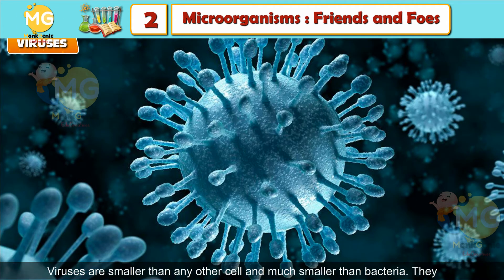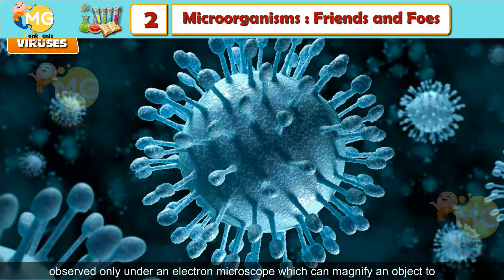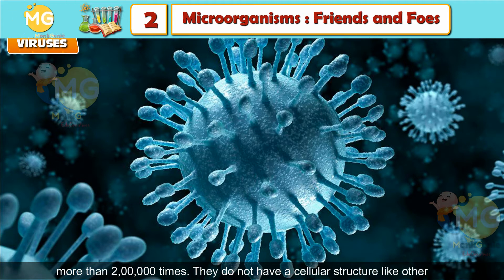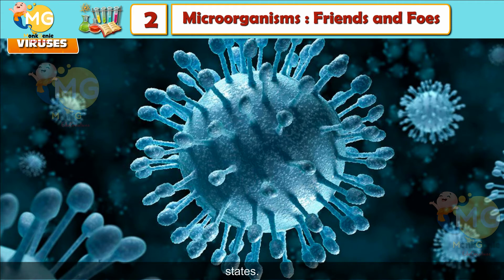Viruses are smaller than any other cell and much smaller than bacteria. They are so small that they cannot be seen under a light microscope. They can be observed only under an electron microscope, which can magnify an object to more than 2 lakh times. They do not have a cellular structure like other microorganisms. Viruses are peculiar microorganisms as they exist in two states.